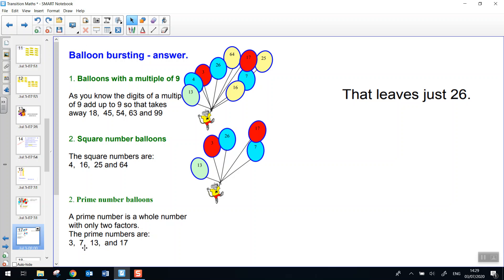Prime number balloons. Three, seven, 13, and 17, which means that the only number that was left was 26.